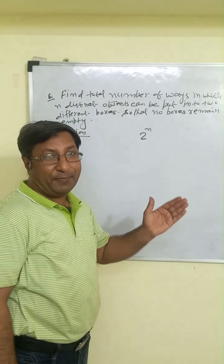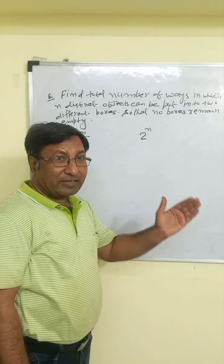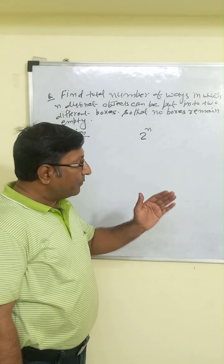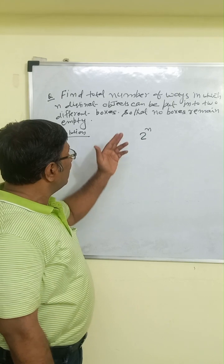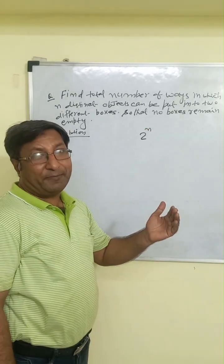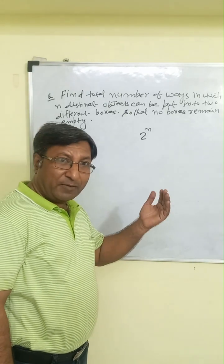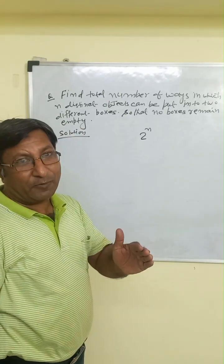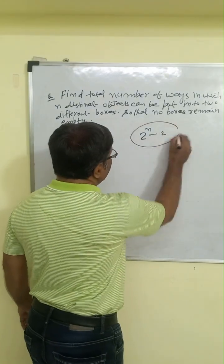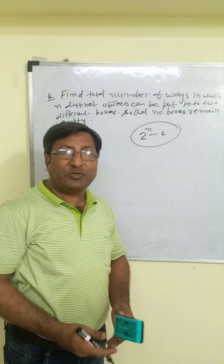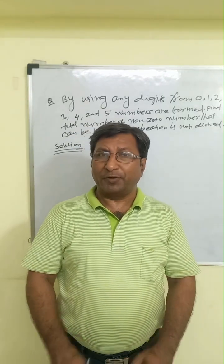Now the condition is that no box remains empty. If all objects are put into one box, the other box will be empty — and similarly for the second box. So there are two ways a box can remain empty. We subtract these two cases, giving us two to the power n minus 2 as our answer.